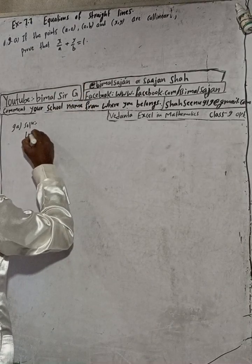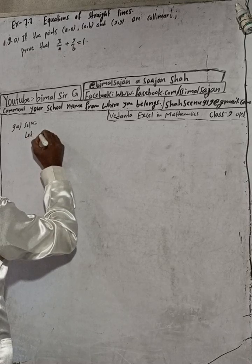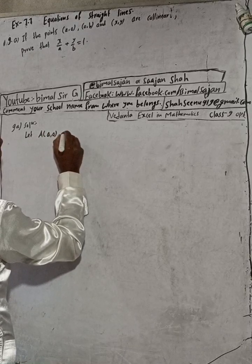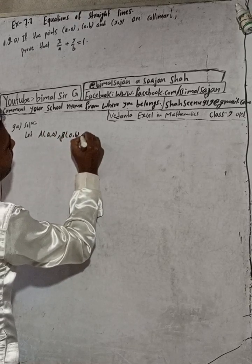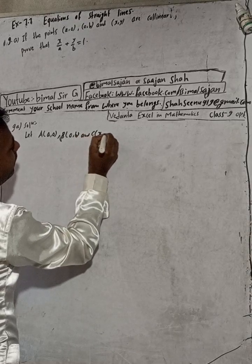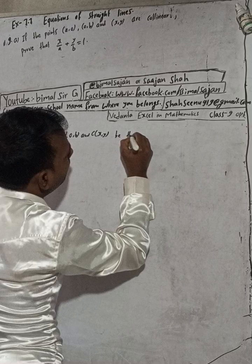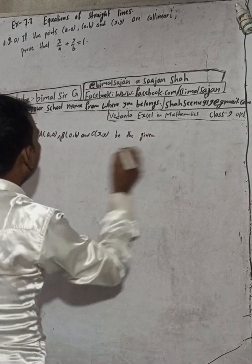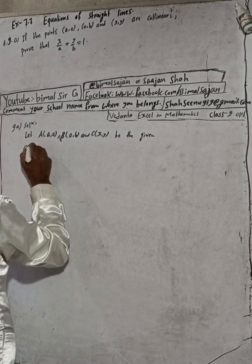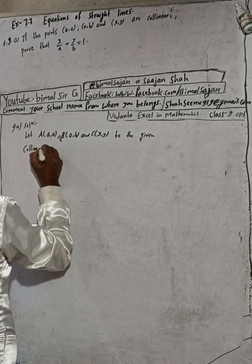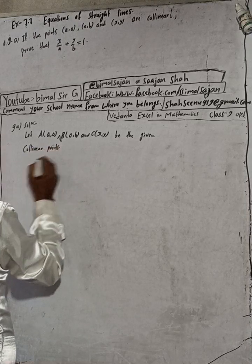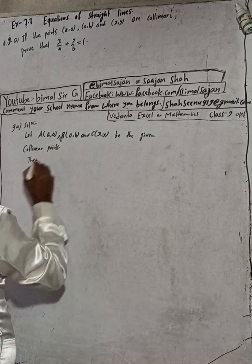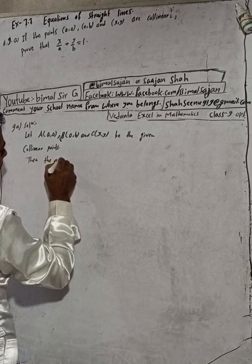Let A(a, 0), B(0, b), and C(x, y) be the given collinear points. Since these points are collinear, then the area of the triangle formed by them will be considered.